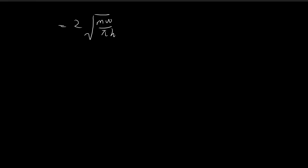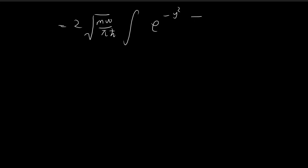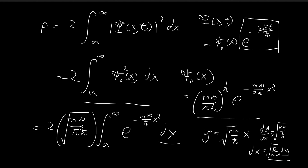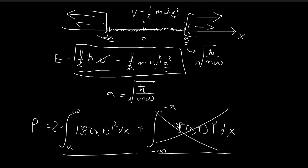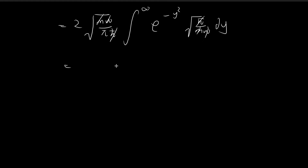Copying out the constants and working through the substitution: the exponential term becomes e to the power of negative y squared. Since dy/dx equals the square root of m omega divided by h-bar, dx equals the square root of h-bar divided by m omega times dy. Substituting dx causes those terms to cancel conveniently. For the bounds: when x equals infinity, y equals infinity; and when x equals a — substituting a equal to the square root of h-bar over m omega — the constants cancel perfectly, giving y equal to one. So this integral runs from one to infinity.